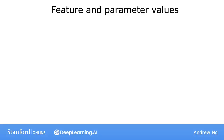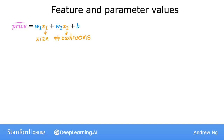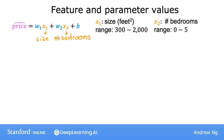Let's start by taking a look at the relationship between the size of a feature — that is, how big are the numbers for that feature — and the size of its associated parameter. As a concrete example, let's predict the price of the house using two features: x1, the size of the house, and x2, the number of bedrooms. Let's say that x1 typically ranges from 300 to 2,000 square feet, and x2 in the dataset ranges from 0 to 5 bedrooms. So x1 takes on a relatively large range of values, and x2 takes on a relatively small range of values.